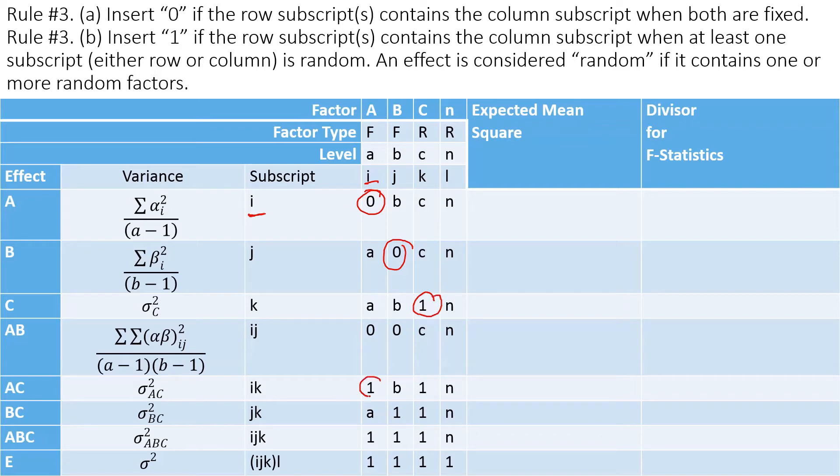For random factor, type 1. Now I is not random, but if at least one is random, because C is random, AC is also random too. BC is random, ABC is random. If you have just one factor random, that makes the whole effect random. So anything, if it contains any of the subscript, instead of 0 you write 1, even though you have the column fixed.